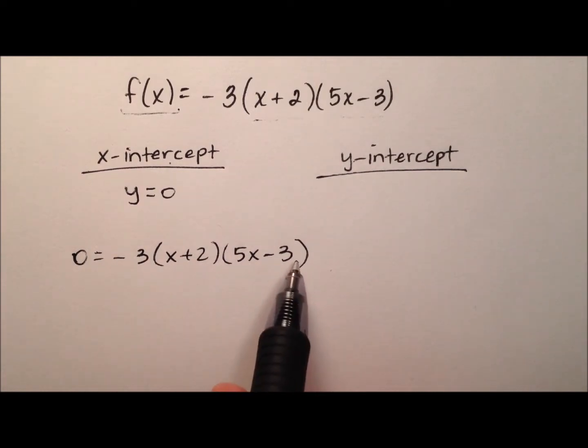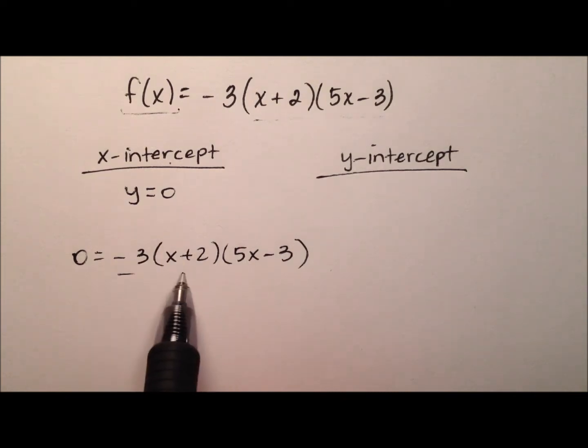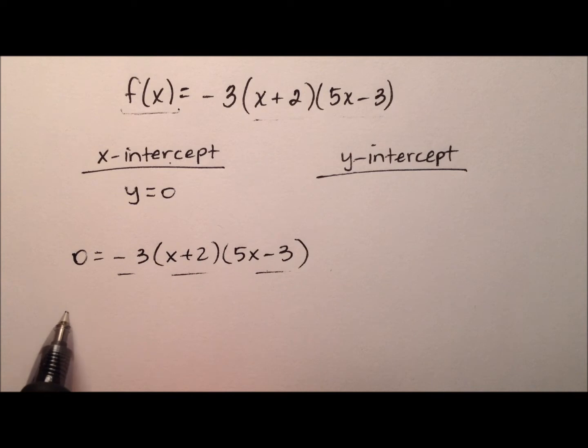This is nice. Once again, as I mentioned, it's already in factored form, so all I need to do is use the zero property of multiplication, set each of these factors equal to 0.